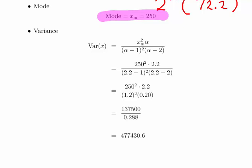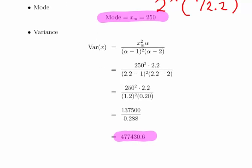The thing about these distributions is variance is not really used a lot, so it's more the quantiles you're interested in. But just as a little exercise, I put it in there. You just put in alpha and Xm and work it out, and you get this number here, 477,430.6. That's units squared.